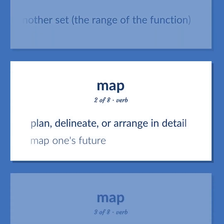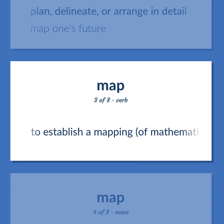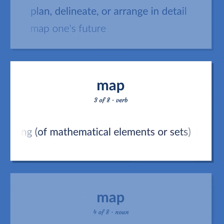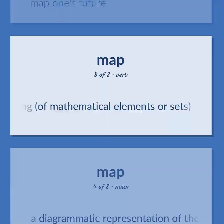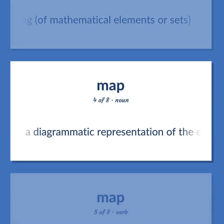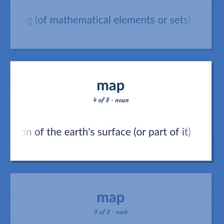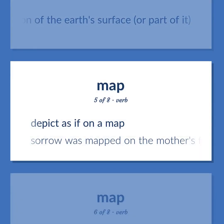Map. Plan, delineate, or arrange in detail. Map one's future. To establish a mapping of mathematical elements or sets. A diagrammatic representation of the Earth's surface, or part of it. Depict as if on a map. Sorrow was mapped on the mother's face.